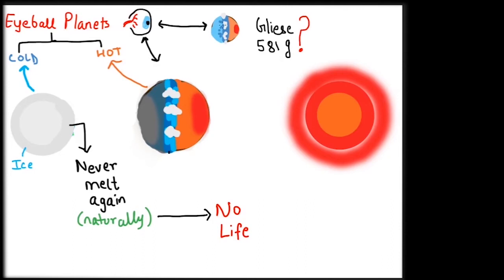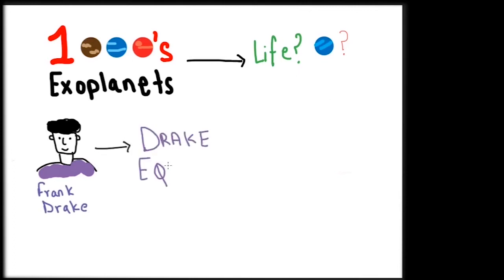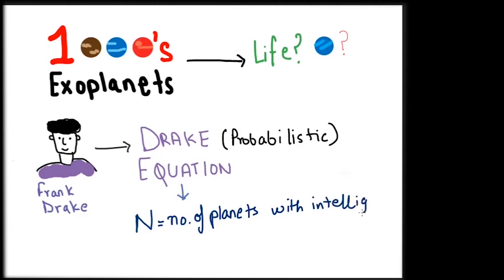We have found thousands of exoplanets and an innumerable of them wait to be discovered. How many of these have the possibility to support life? To answer the question of finding life in the universe, astrophysicist Frank Drake developed the Drake Equation. It is an equation that works on the probabilities of certain criteria being fulfilled to estimate the number of planets with life. The formula is simple. N, which is the number of planets with intelligent life we can detect, is equal to the product of seven terms.